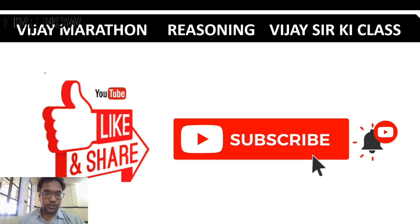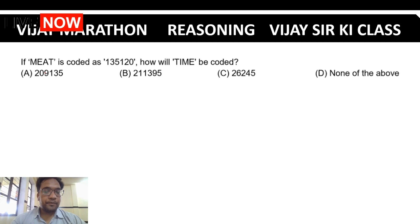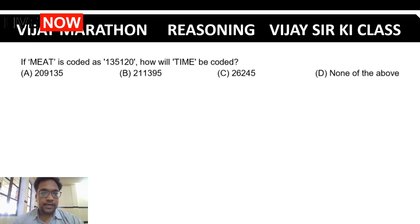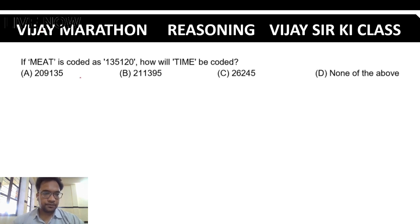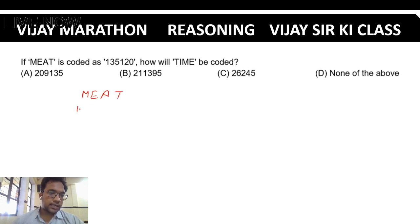Meet is coded as 135120. Then how will TIME be coded? Okay — MEET: M is 13, E is 5, E is 5... working out letter positions. M is order 13, E is order 5, E is order 21, T is order 20.